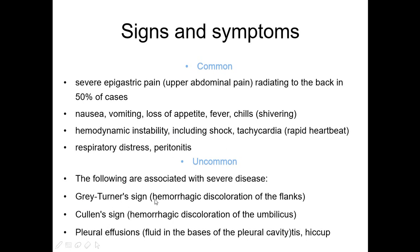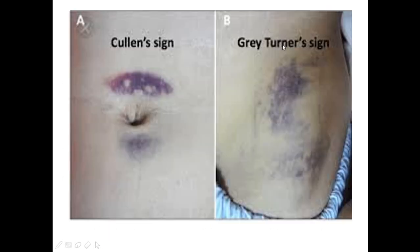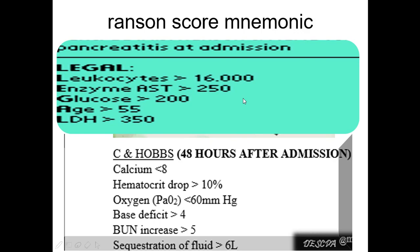Grey-Turner sign is hemorrhagic discoloration in the flank, and Cullen's sign is hemorrhagic discoloration of the umbilicus. The next picture shows Cullen's sign and Grey-Turner sign.